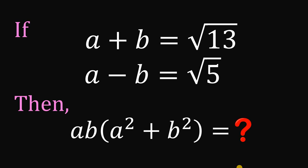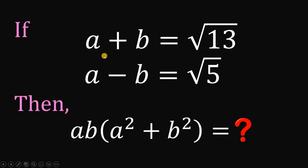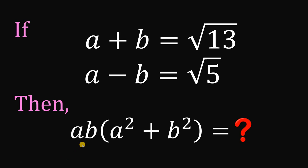Can you solve this math challenge? Here's the question. If a plus b equals the square root of 13 and a minus b equals the square root of 5, then what is the value of ab multiplied by a squared plus b squared?